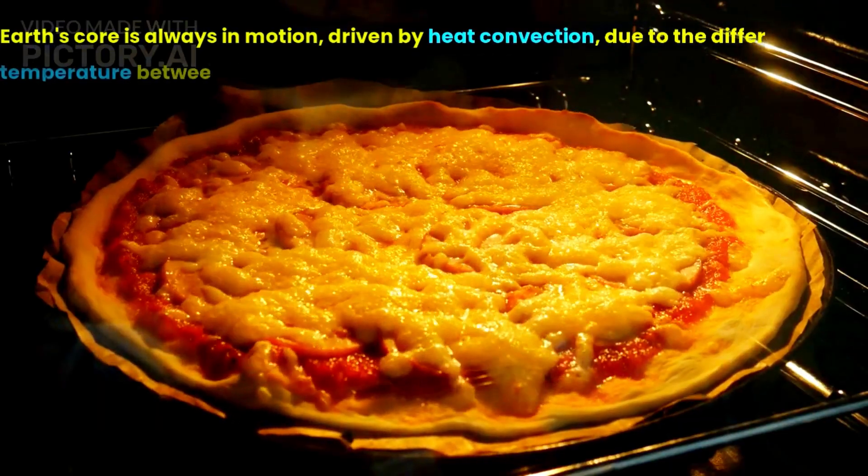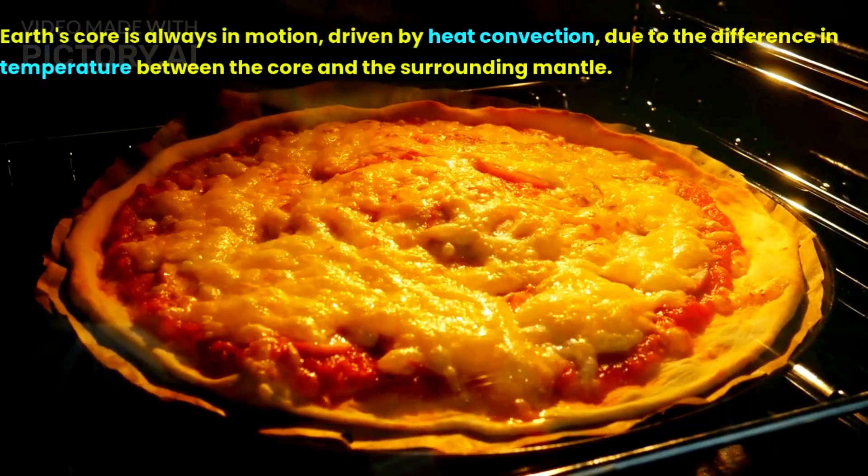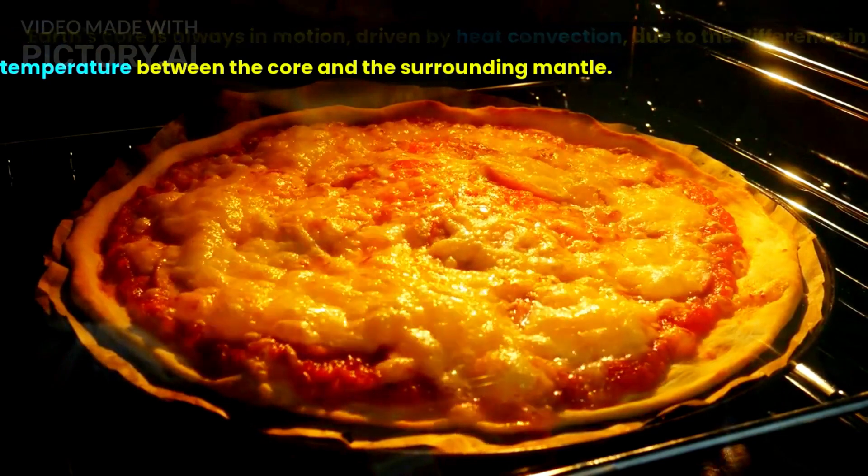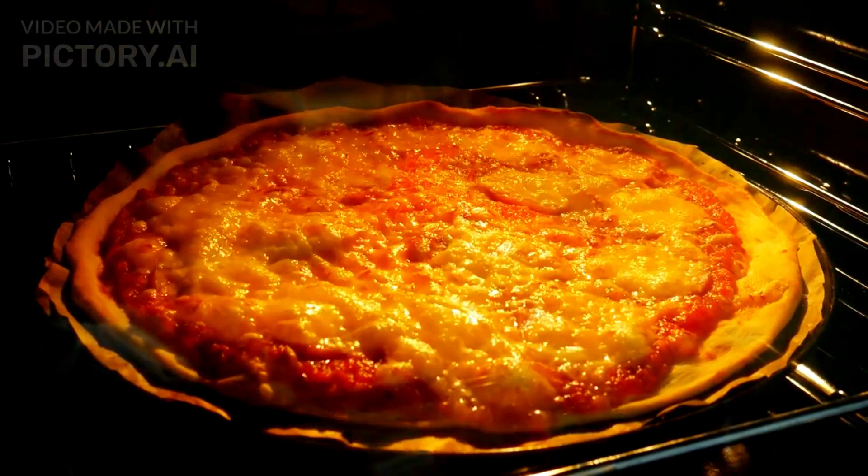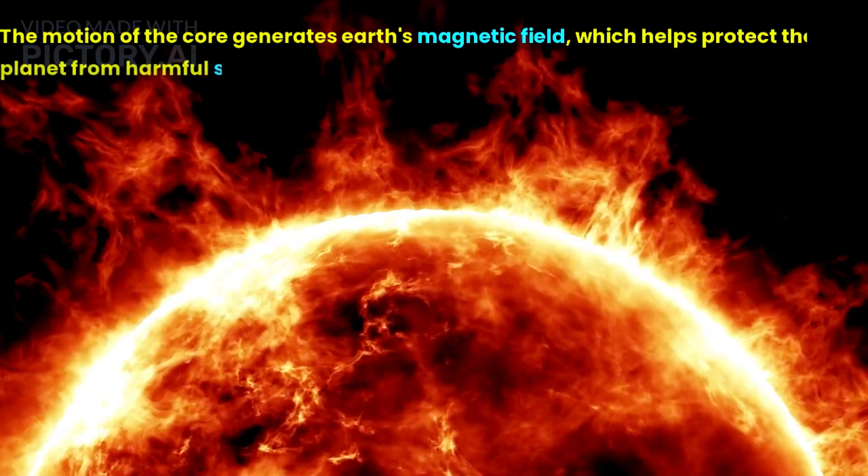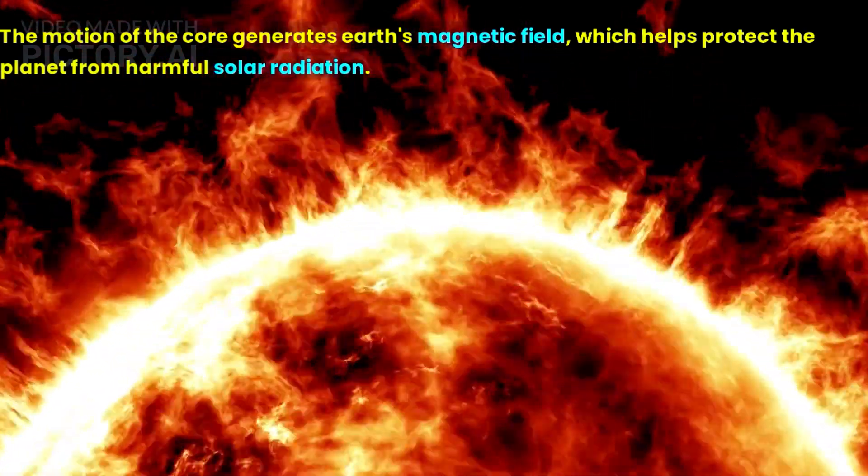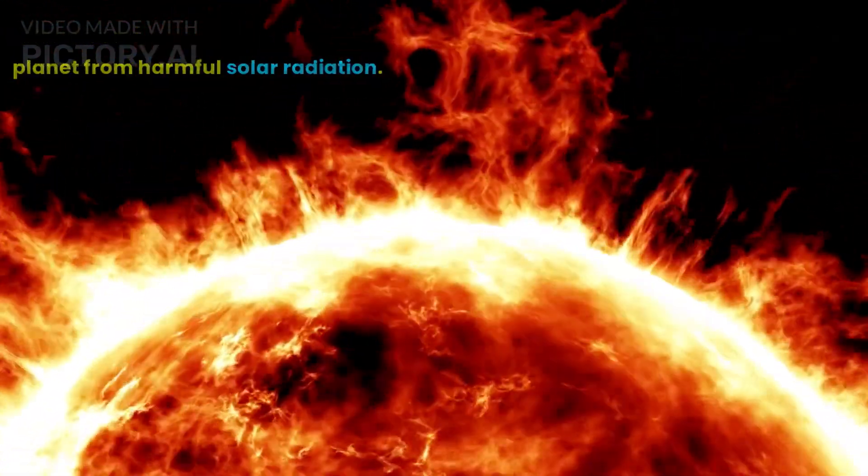Earth's core is always in motion, driven by heat convection, due to the difference in temperature between the core and the surrounding mantle. The motion of the core generates Earth's magnetic field, which helps protect the planet from harmful solar radiation.